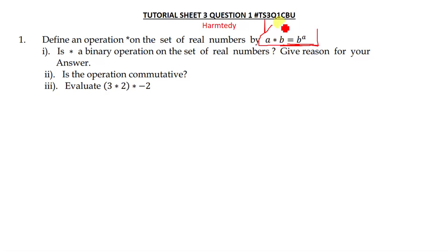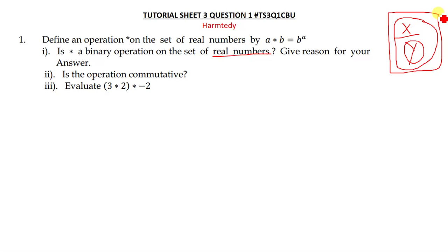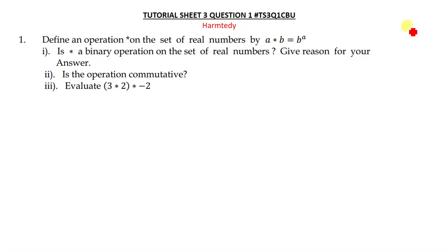When there is a way to make this operation undefined, then star is not a binary operation on real numbers. The only situation where an operation or function becomes undefined is when you have a fraction — for example, x over y. If the set contains zero and you substitute zero for y, the operation becomes undefined.